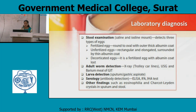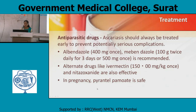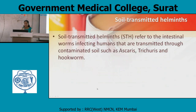Treatment — antiparasitic drugs: Ascaris should always be treated early to prevent potentially serious complications. Albendazole 400 mg once. Mebendazole 100 mg twice daily for 3 days, or 500 mg once — this is recommended. Alternate drugs are ivermectin and nitazoxanide. In pregnancy, pyrantel pamoate is safe. Other soil-transmitted helminths include Ascaris, Trichuris, and hookworms. Thank you.